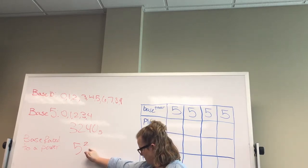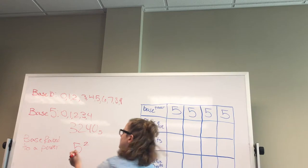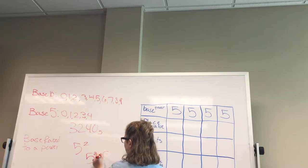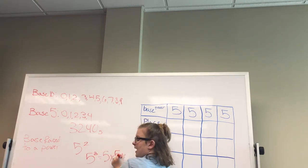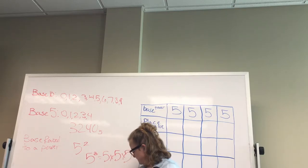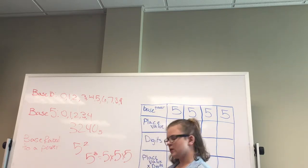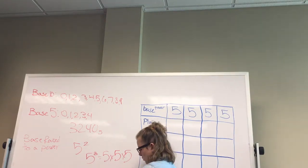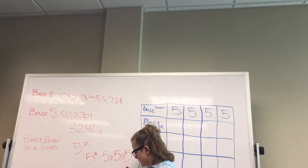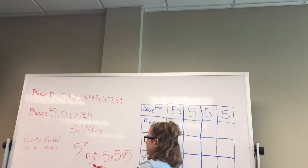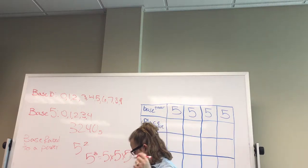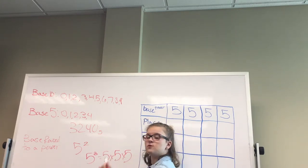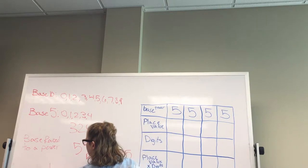For example, five squared: five is the big number, which is the base, and two is the small number, which is the power. So five to the third power equals five times five times five. You write down the big number and put multiplication signs in between, repeating it the number of times indicated by the power. Five times five times five equals 125.